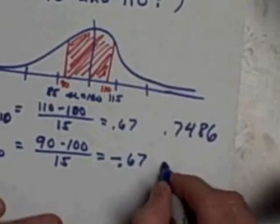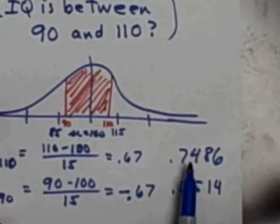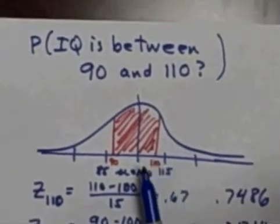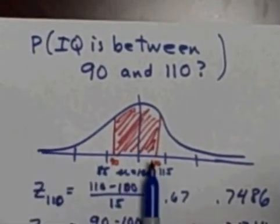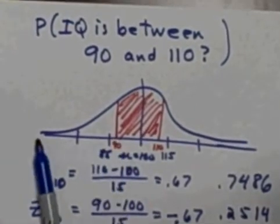If I look up negative 0.67, that's again starting with a zero, find 0.6 and bring it over to the eighth column where we're talking about a hundredth place of seven, I get 0.2514. We're saying approximately 75 percent of the area is left of the 110 and approximately 25 percent of the area is to the left of 90.